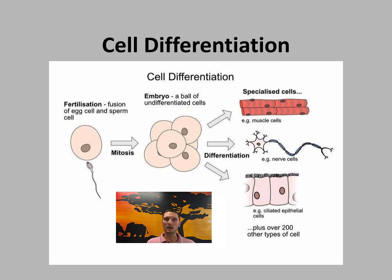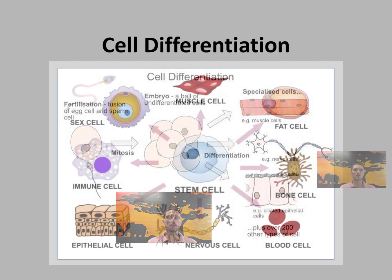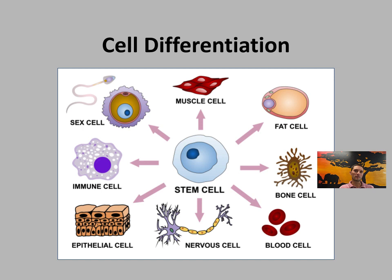How do cells become specialized if they all have the same DNA? There are about 4,000 genes active in all different cell types, and what makes each cell type different is which of those genes are turned on or off — like a light switch. In some cell types, certain switches are on and others are off, and this controls which proteins are produced, allowing cells to differentiate.